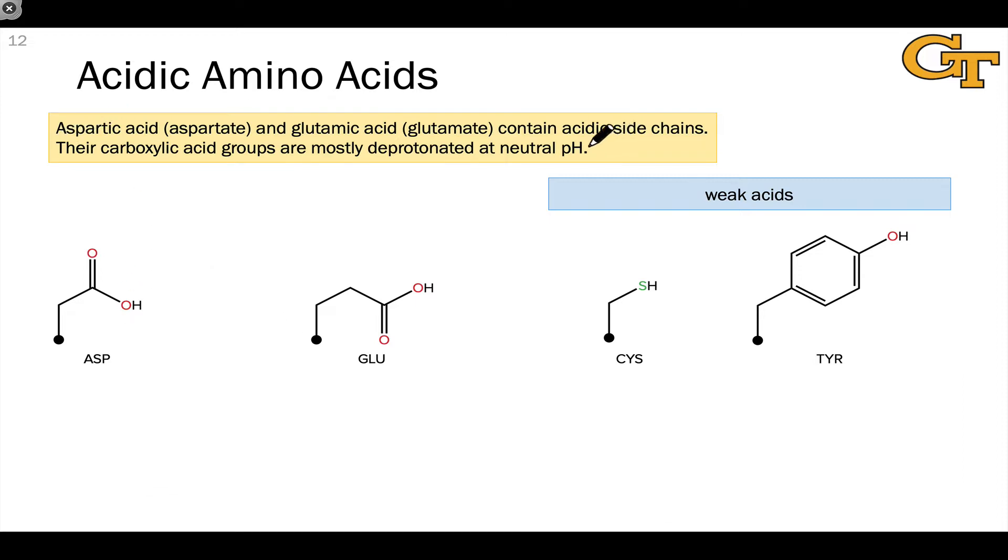Aspartic acid and glutamic acid contain acidic side chains because they contain carboxylic acid groups, or carboxylates, within their side chains.